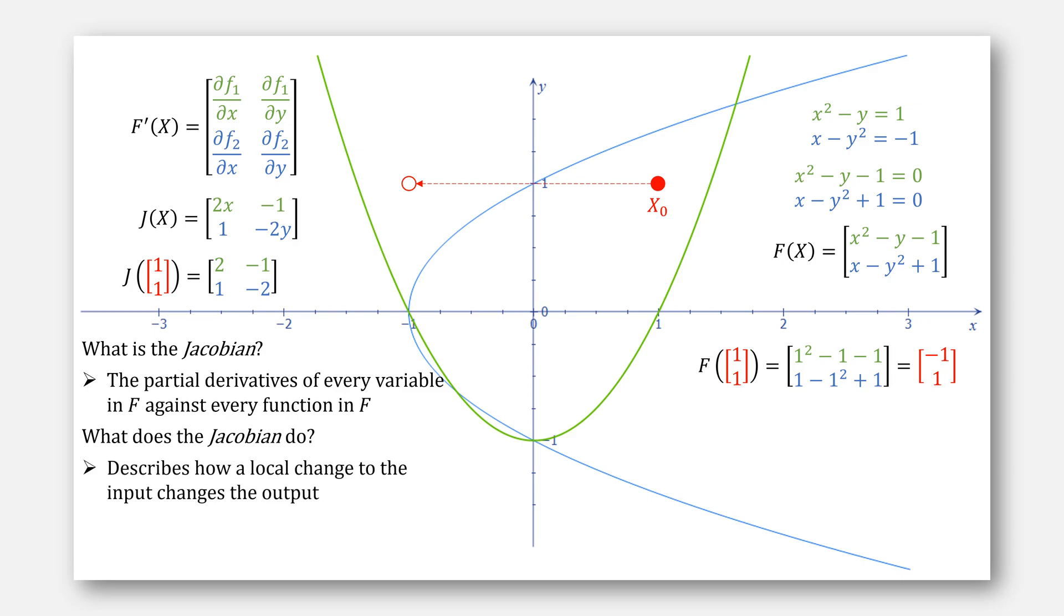And for that, it describes how a local change to the input changes the output of our function. As an example, let's make a small change to our input going a little bit to the right of (1,1). What is the change to our output going to look like?